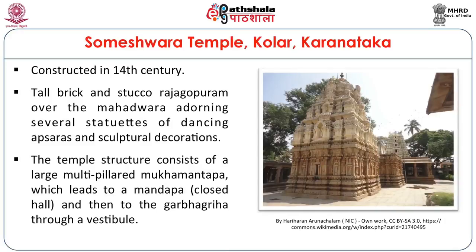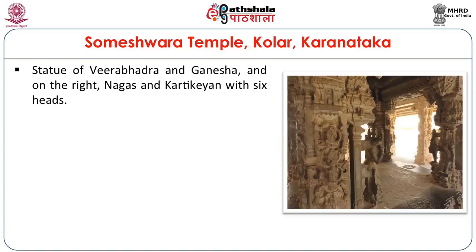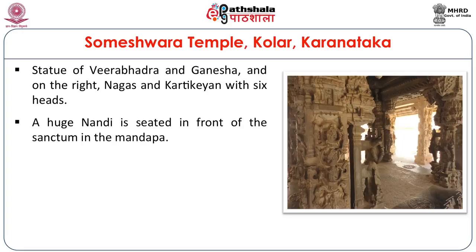Vijayanagara Empire kings were great patrons of art and architecture. During their era, Karnataka music was developed, as well as various dance forms like Bharatanatyam and Kuchipudi. You can find various postures of dances in various temples. The temple structures consist of a large pillared Mukha Mandap which leads to another closed hall and Mandap, then to the Garbhagriha through the vestibule. There is a statue of Veerabhadra and Ganesha, and on the right the Nagas and Kartikeya with six heads.